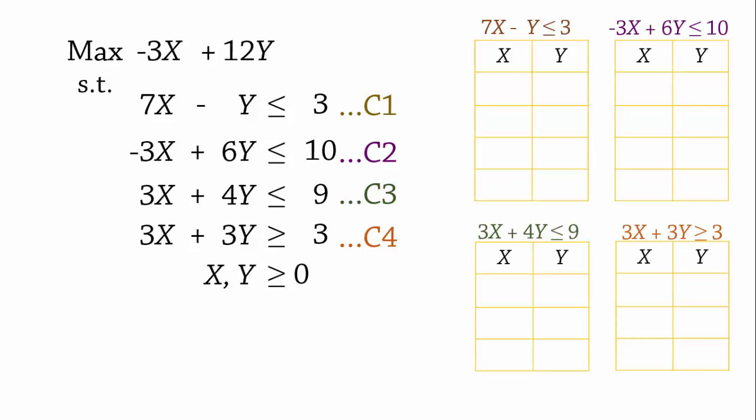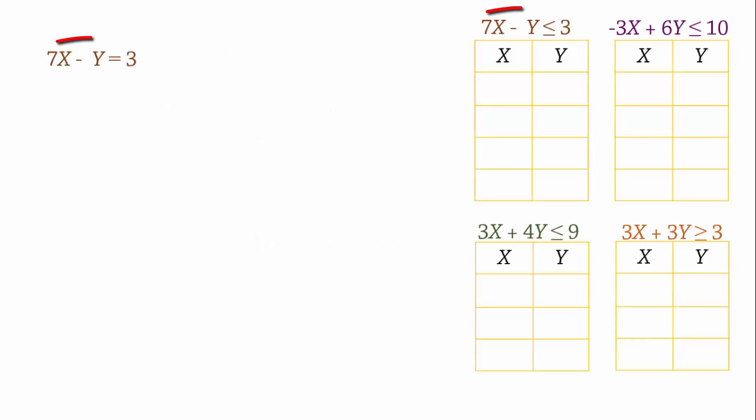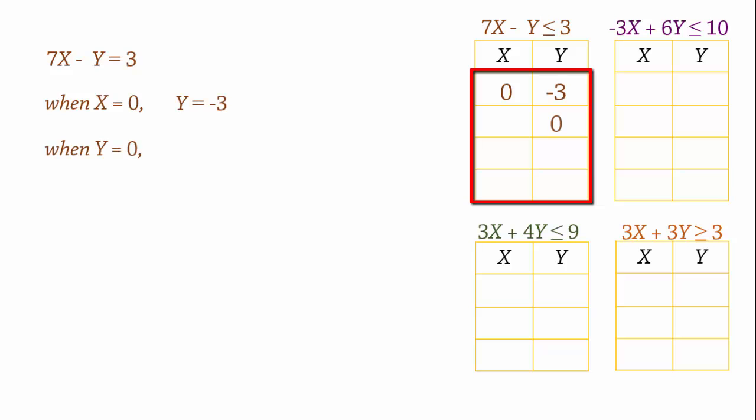Let's start by setting up tables to find the points. The line equation for constraint 1 is 7x minus y equals 3. So when x equals 0, y equals negative 3. And when y equals 0, x equals 0.43.